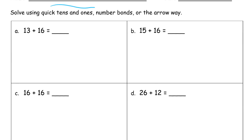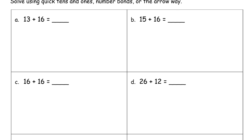Now we're solving using quick tens and ones, number bonds, or the arrow way. We're going to be writing some equations, but it's up to us which method we want to choose. One of the things we're going to really concentrate on is to look at the ones digits first, and that will usually tell us what strategy we're going to use.